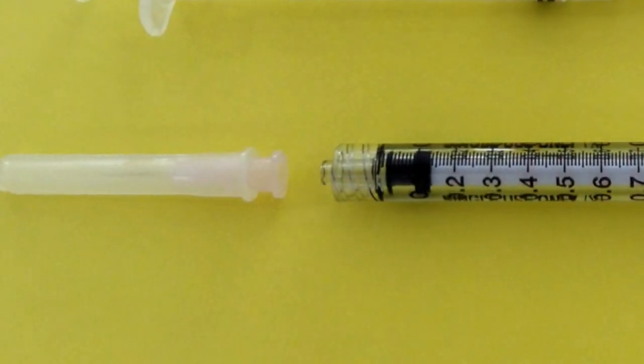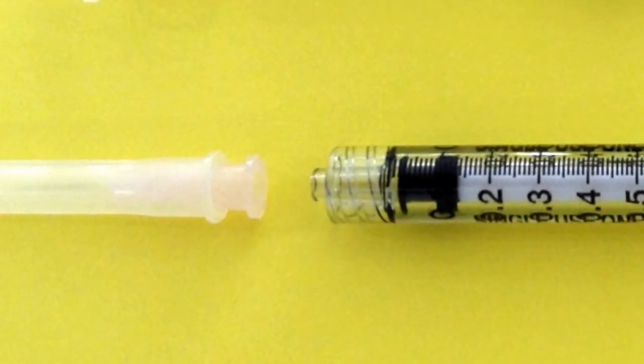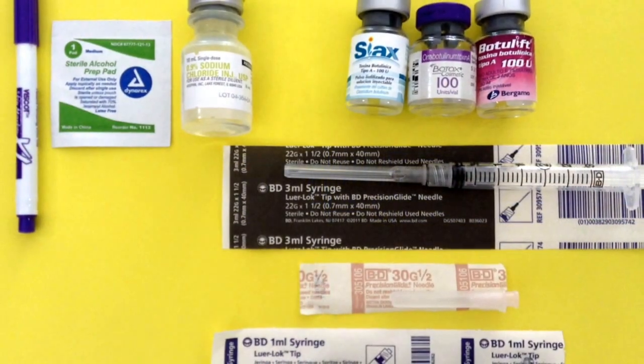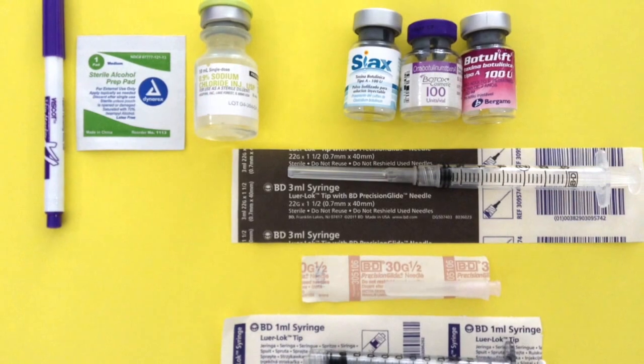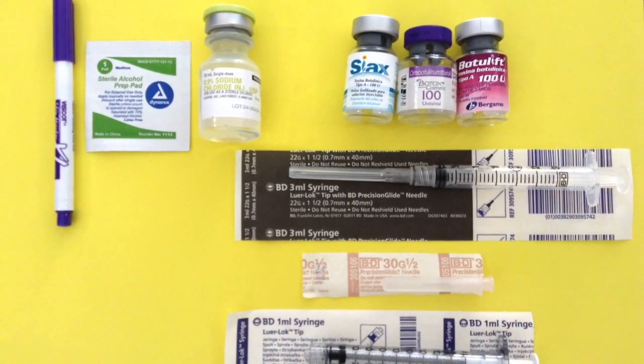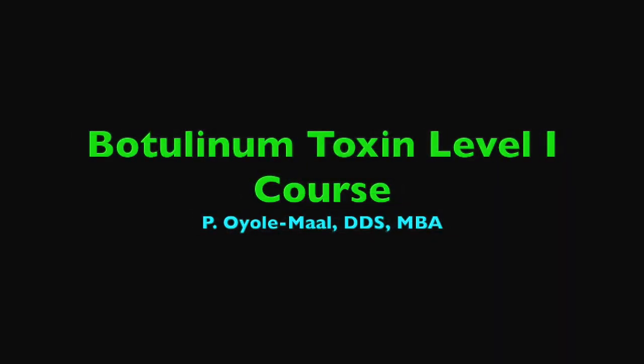Luer lock syringes can be attached to this needle to aspirate the volume you need. The needles for application should be between 29 and 32 gauge and half inch long. Make sure you understand the toxin unit system well before moving forward and good work.